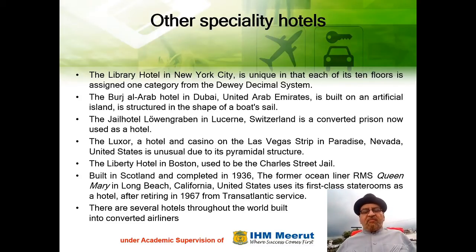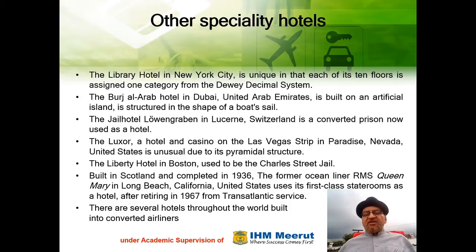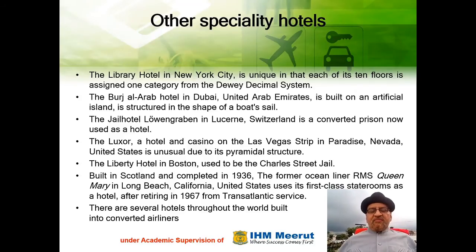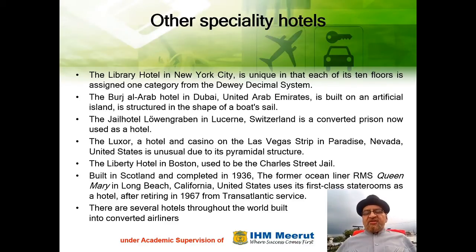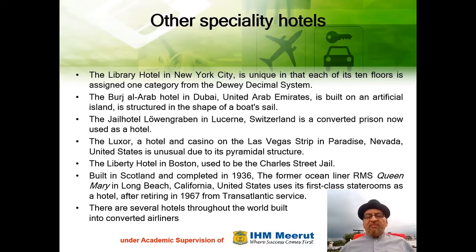The Luxor Hotel and Casino on the Las Vegas Strip in Paradise, Nevada is unusual due to its pyramidal structure. The Liberty Hotel in Boston used to be the Charles Street Jail. The former ocean liner RMS Queen Mary in Long Beach, California, built in Scotland and completed in 1936, uses its first-class staterooms as a hotel after retiring in 1967 from transatlantic service. There are also several hotels throughout the world built into converted airliners.